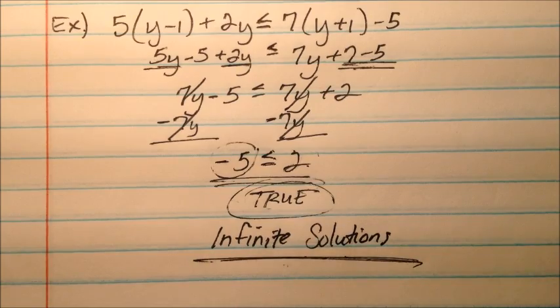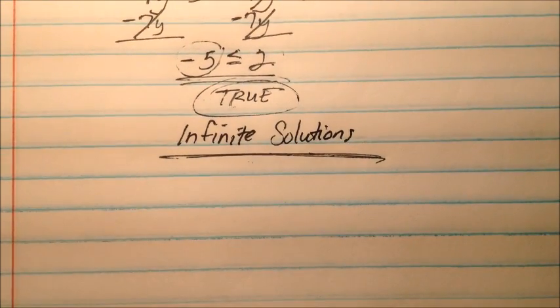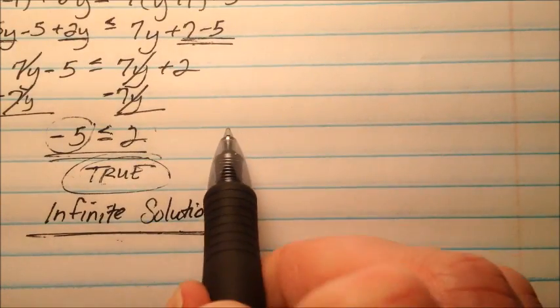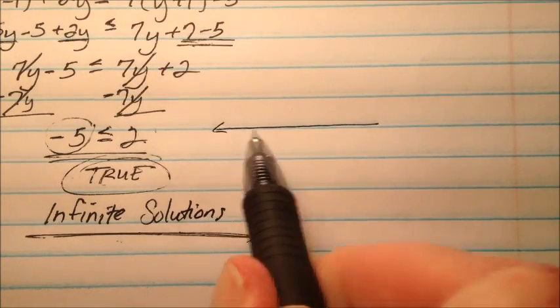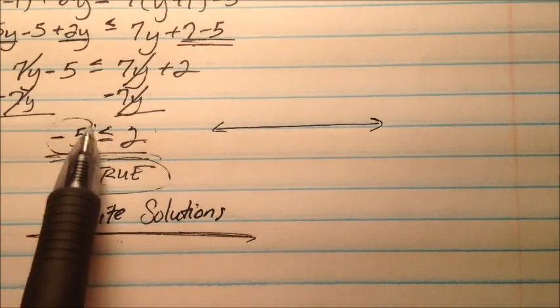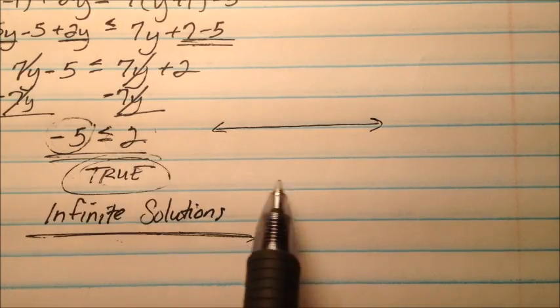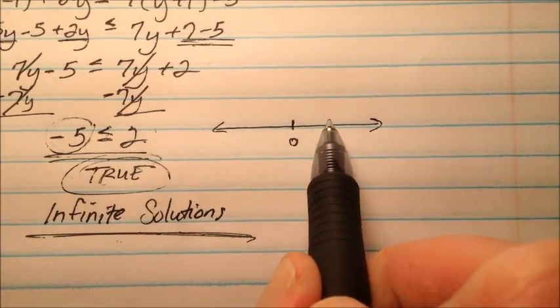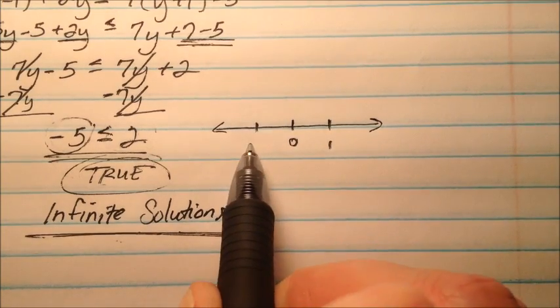But since it's an inequality, we need to graph it. So maybe I'll jump over here. So we don't really have one given number or certain number to put on our number line. So I'm just going to put a zero right here, and maybe you can do a couple numbers around there.